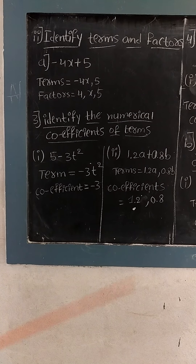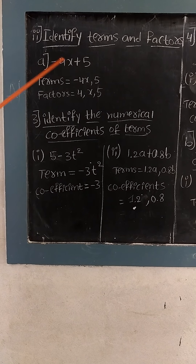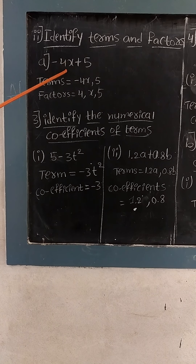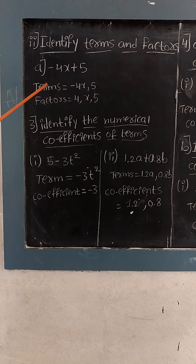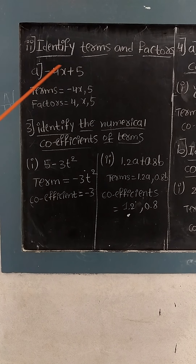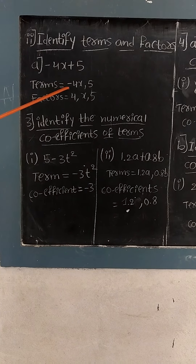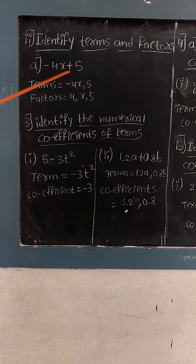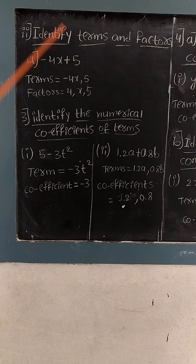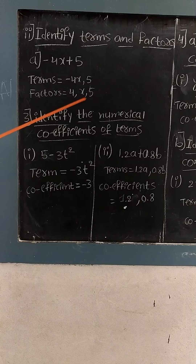Next, identify terms and factors. The first question is minus 4x plus 5. In this expression these two are the terms: minus 4x and 5. This expression is made up of two terms. For the factors, we separate the numerical value and the variable — that is the constant and the variable. So the factors are minus 4, x, and 5.